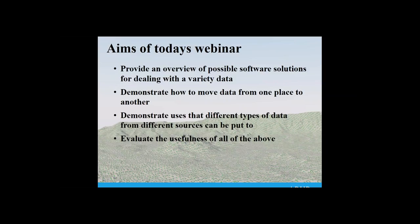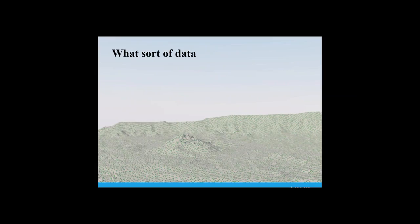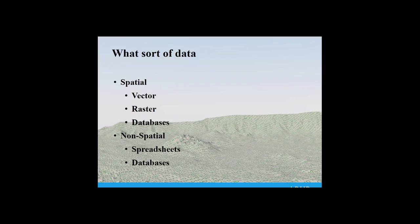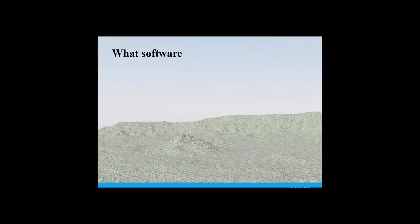We're surrounded by data — some of it's useful, some of it's not. So I've tried to pick out what I deal with every single day. The types of data we deal with are generally spatial: we start with vector data, then move on to raster data and spatial databases. Data can also come in the form of spreadsheets. The software I'm going to concentrate on today is the top five pieces I use on a day-to-day basis.